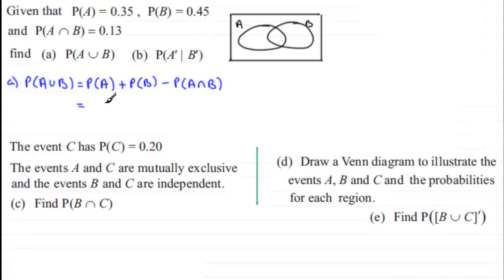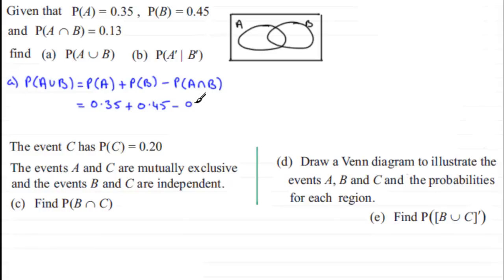Substituting in our values: P(A) = 0.35, P(B) = 0.45, and P(A∩B) = 0.13. Doing this sum gives P(A∪B) = 0.67.